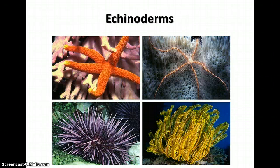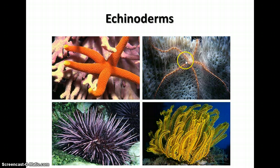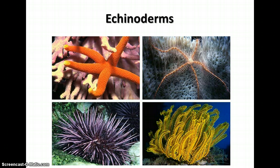Here are some pictures of echinoderms. This is a sea star — a typical starfish you'd see in the ocean. This one here is called a brittle star; the legs break off real easily from the central part. Here's a sea urchin — we saw some sea urchin skeletons in class, but this is the living sea urchin with the spines. And this is called a feather star or sea lily — very different; these are sessile, whereas the others move around.